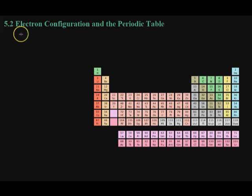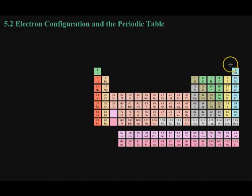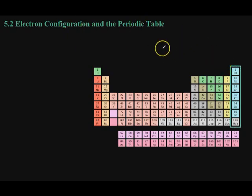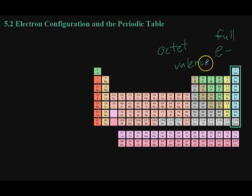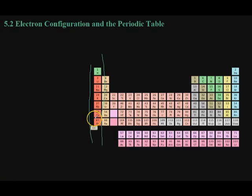In this video we're covering chapter 5, section 2, which is electron configuration and the periodic table. As mentioned in the last chapter, when scientists laid out the periodic table, they found some extra elements later on that were very hard to categorize because they were highly unreactive. These are known as the noble gases, and they are unreactive because they follow the octet rule completely — their entire outer shell of electrons is full. This outer shell of electrons, often called the valence electrons, is what determines an element's chemical properties.